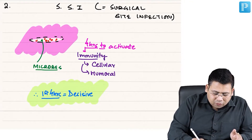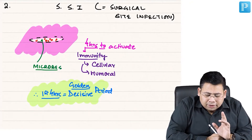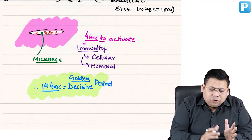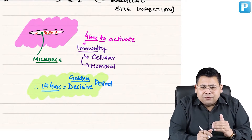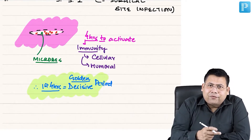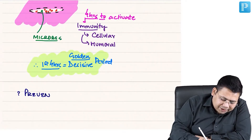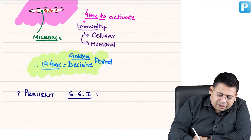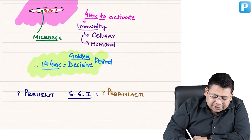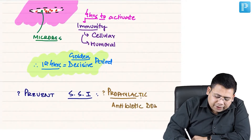Therefore, the first four hours are considered the decisive or golden period of a wound, because that is the time which decides the fate of the wound — whether it will get infected or not. We can control this risk of SSI by giving prophylactic antibiotics.